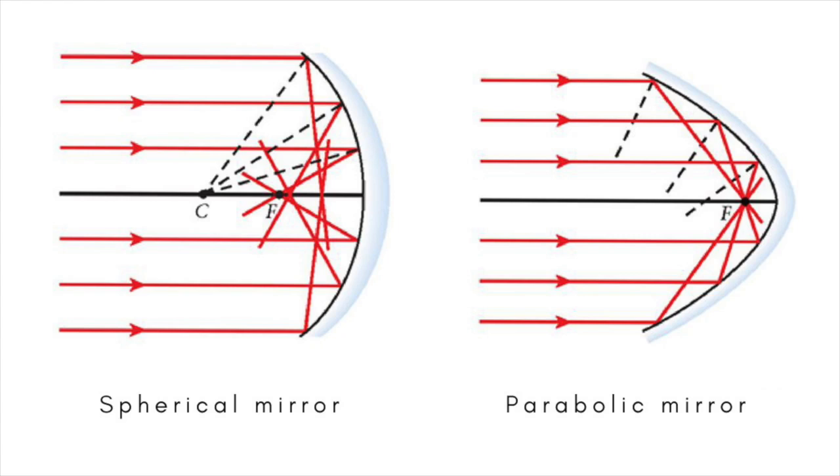He wrote widely on other subjects including science, medicine and philosophy. In On the Burning Mirror he showed that parallel rays of light are not brought to a focus by a spherical mirror, as had been previously thought, and he discussed the focal properties of a parabolic mirror.